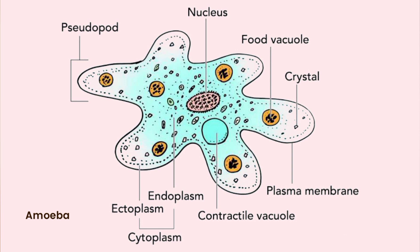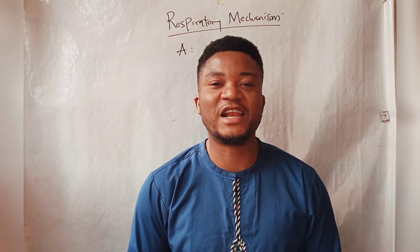We need to understand that all these processes happen across the entire body surface — that is to say, every part of the amoeba, all across the body surface, is where respiration tends to occur. Thank you, class.